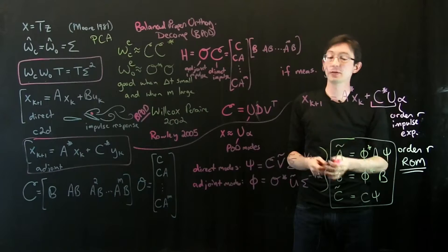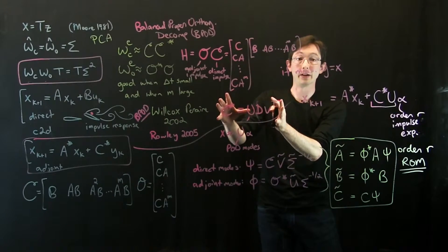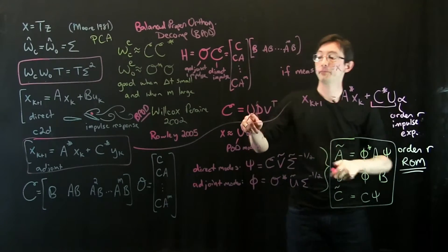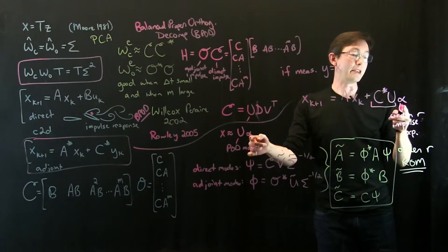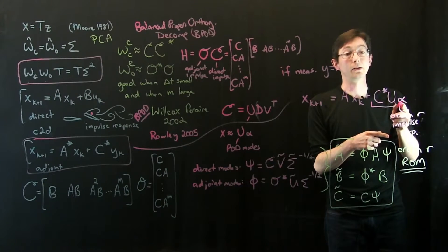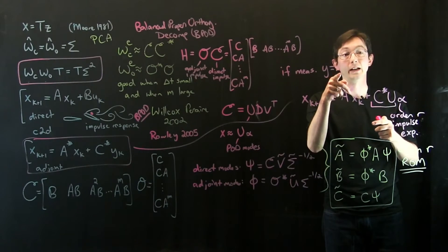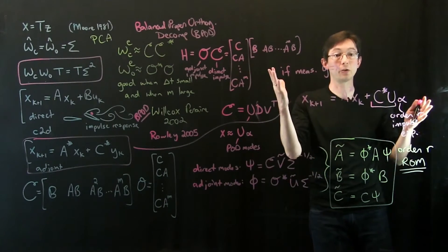You do POD on your direct snapshots, you get your POD modes, these are the dominant coherent structures. And then in the adjoint equation, you only excite those modes instead of directly exciting every channel of X. Pretty cool idea.